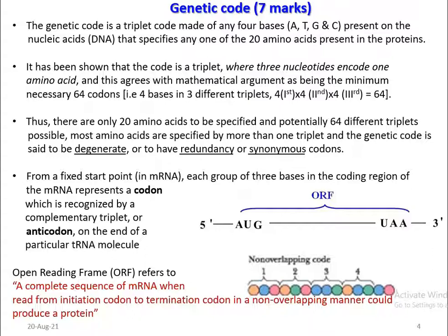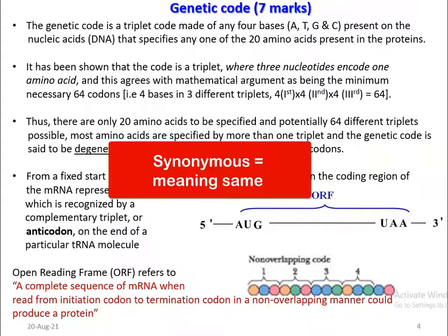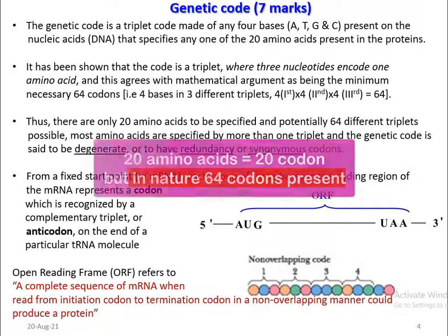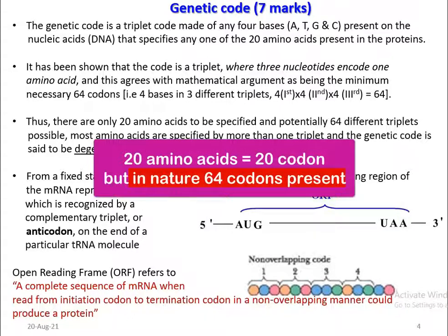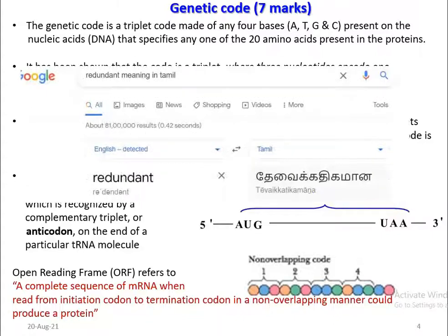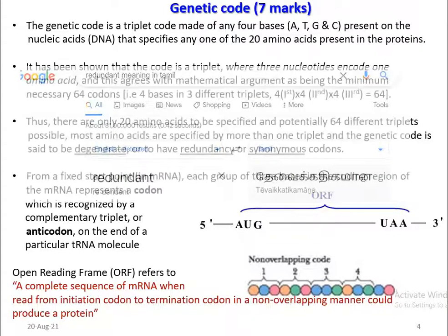From this point, you can understand that 20 amino acids are present — so why do we need 64 different codons? This brings up the concept of redundancy, synonymous, or degenerate codons. The simple meaning is that 20 amino acids could be coded by just 20 codons. However, 64 different types of codons exist in nature, meaning the codons are degenerate, redundant, or synonymous.